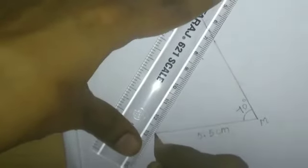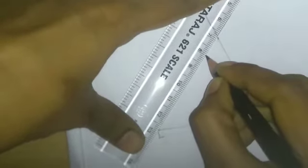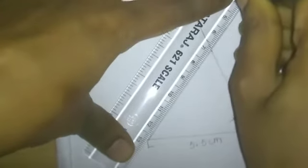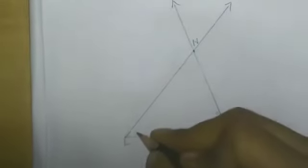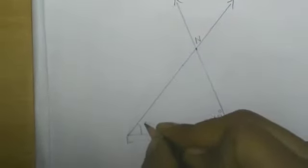Draw a line here. The two lines cut at a point, this is point N. This is angle 50 degree.